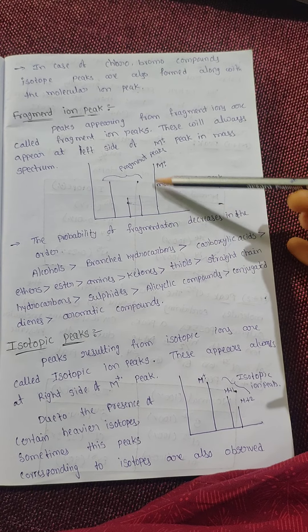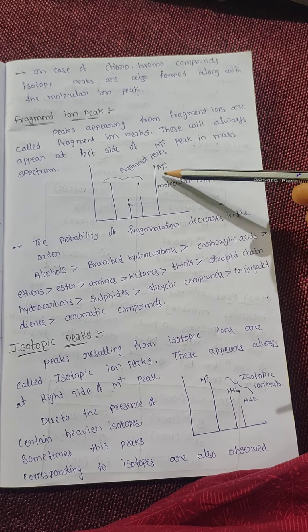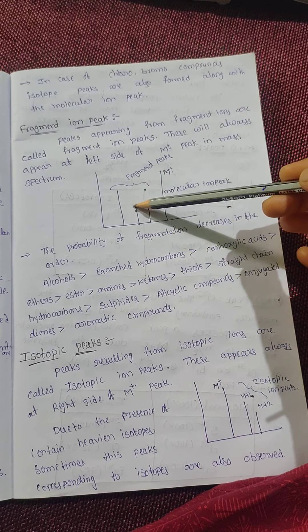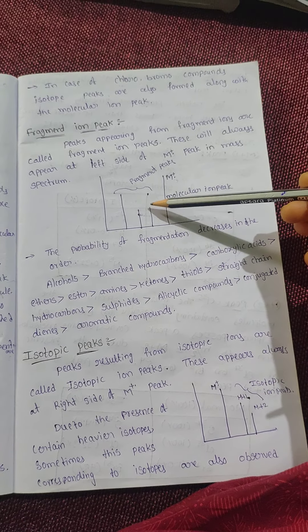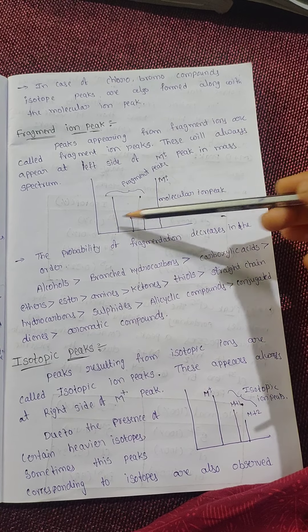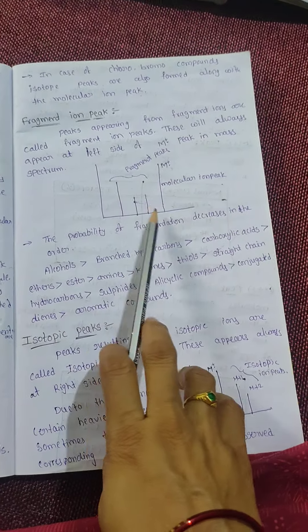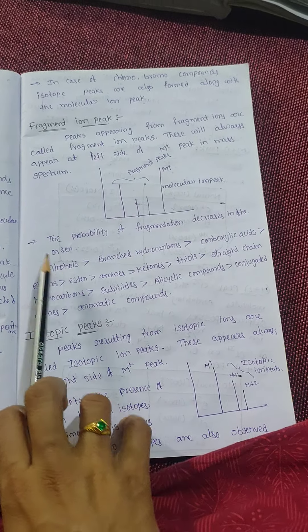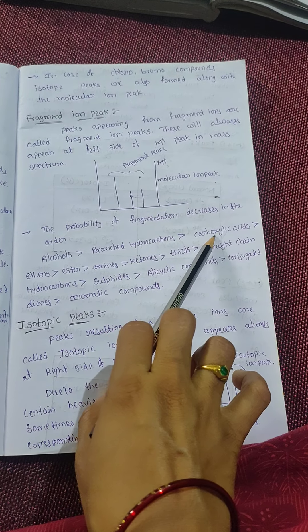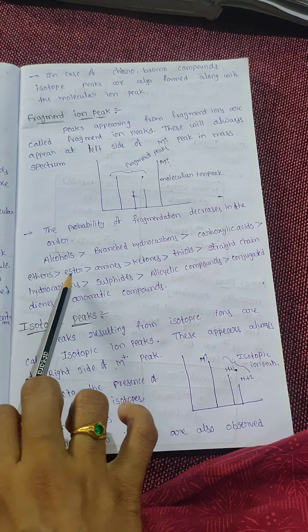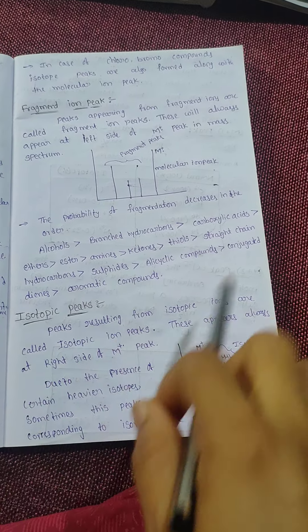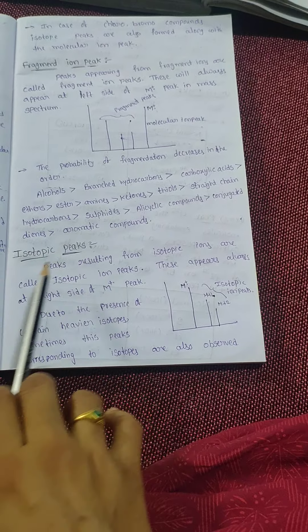Next are fragment ion peaks. Peaks appearing from fragment ions are called fragment ion peaks. These always appear at the left side of the molecular ion peak in the mass spectrum, because fragment ions always have less molecular weight than the molecular ion. The probability of fragmentation decreases in the order: alcohols > branched hydrocarbons > carboxylic acids > ethers > esters > amines > ketones > thiols > straight-chain hydrocarbons > sulfides > halicyclic compounds > conjugated dienes > aromatic compounds.